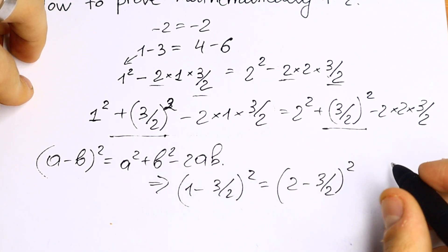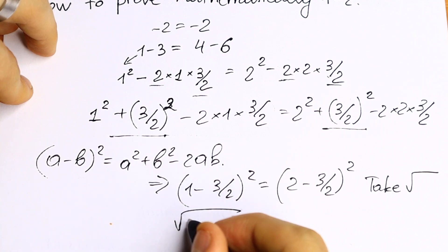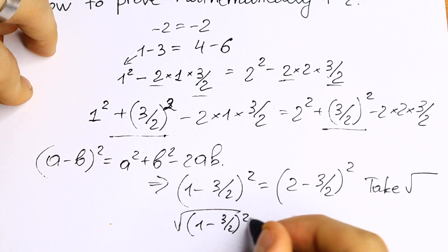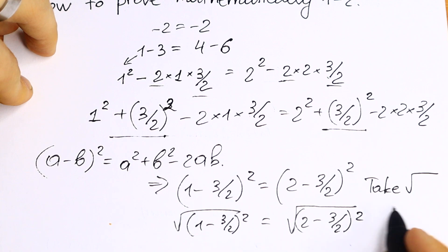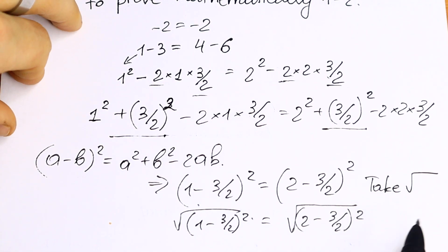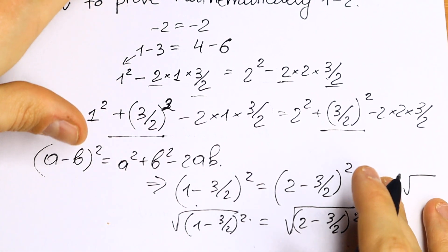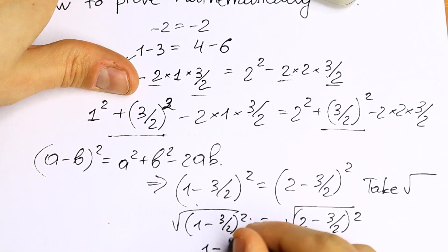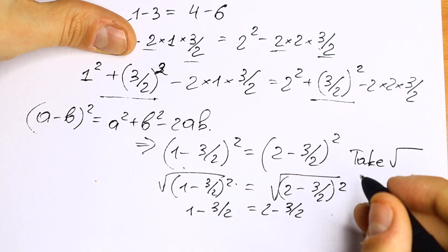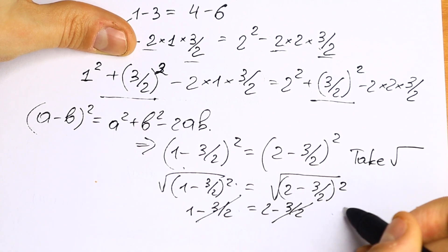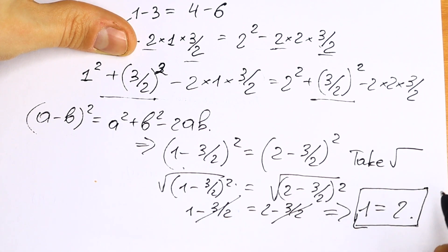What we're going to do next — take a look. If we take the square root of both sides, we get: √(1 minus 3/2)² equals √(2 minus 3/2)². Of course the square and the square root sign cancel, so we're left with only the expressions under the square root sign. We get 1 minus 3/2 equals 2 minus 3/2. And if we cancel minus 3/2 from both sides, we get that 1 equals 2. And this is our proof.